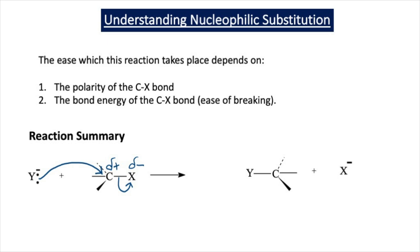The reactivity of halogeanoalkanes depends on two competing factors. The first is the polarity of the carbon-halogen bond, and the second is the bond energy of the carbon-halogen bond — in other words, how much energy is needed to break this bond. Looking at the reaction summary, the reason the nucleophile attacks the halogeanoalkane is because it's attracted to the delta-plus carbon.